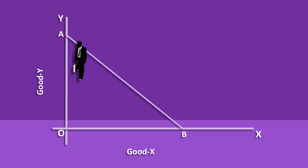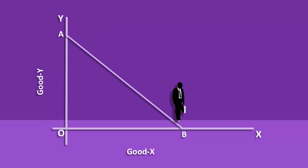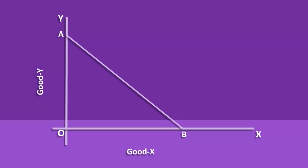He can move inside the triangle AOB, but he cannot move beyond the price line. A sensible consumer will move along the price line, as that alone will exhaust his income after buying a combination. We shall now define consumer equilibrium.